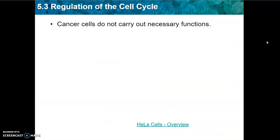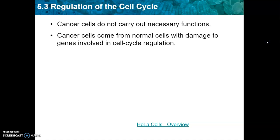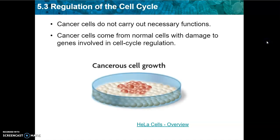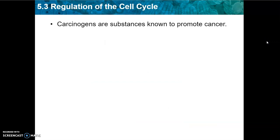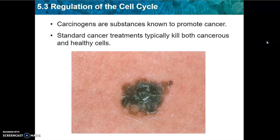Cancer cells don't carry out necessary functions. They come from normal cells, but somehow they've been damaged during cell cycle regulation. Carcinogens are substances that are known to promote cancer. Standard cancer treatments typically kill both cancerous and healthy cells.